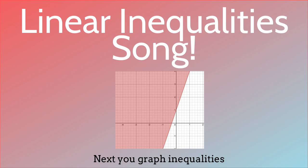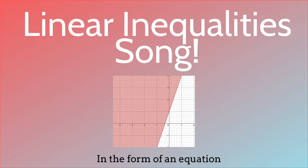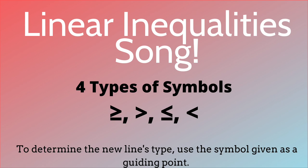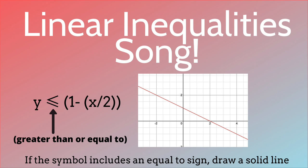Next, you graph inequalities in the form of an equation. To determine the new line's type, use the symbol given as a guiding point. If the symbol includes an equal to sign, draw a solid line.